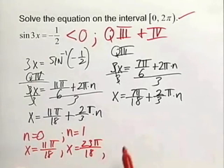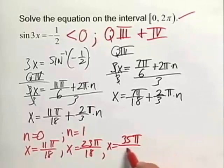And finally, if we add n equals 2, we're going to end up with x being equal to 35 pi over 18. And those are the three solutions from our first answer, x equals 11 pi over 18 plus 2 thirds pi n.